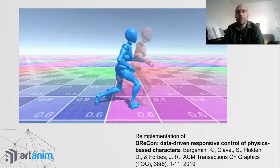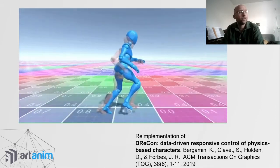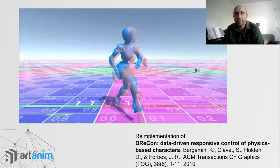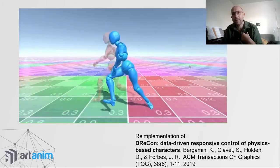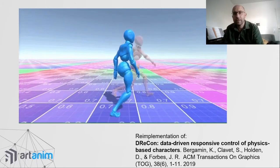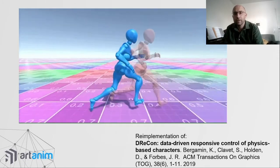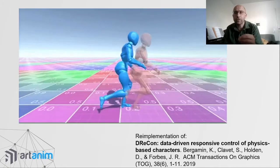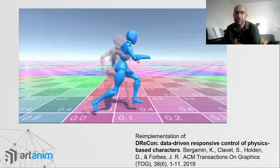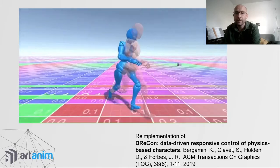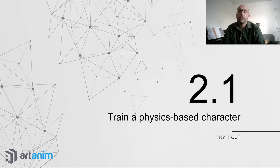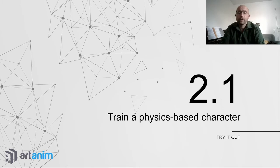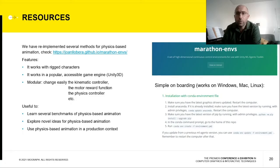Another approach is to have a kinematic controller — shown here as the red character — and then a physics-based character that tries to imitate the output of the kinematic controller, but inside a physical space with collisions and forces. To train such a physics-based character, we will use a project called the Marathon Environments.